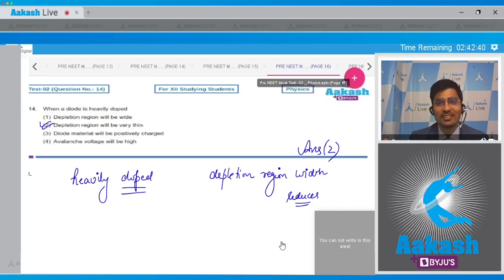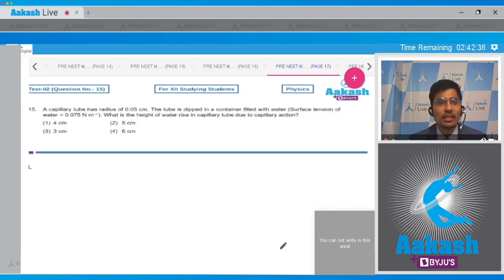Now let us solve question number 15. In question 15, a capillary tube has a radius of 0.05 centimeters. The tube is dipped in a container filled with water. The surface tension of the water is given as 0.075 newton per meter. What is the height of water rise in the capillary due to the capillary action? The four options are 4 centimeter, 5 centimeter, 3 centimeter, and 6 centimeter.